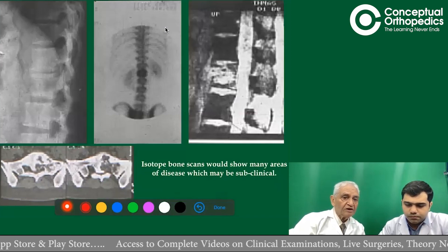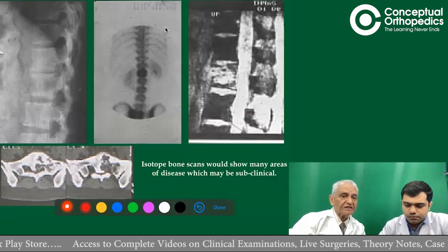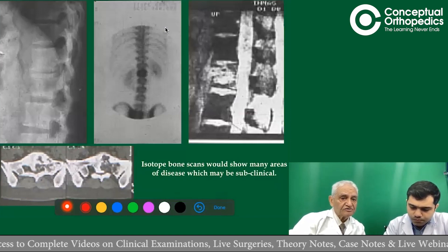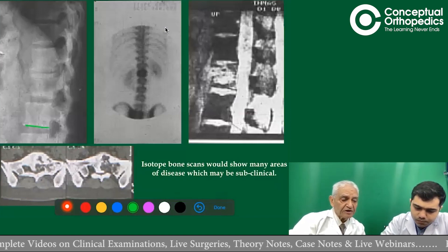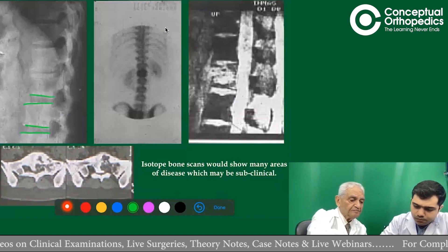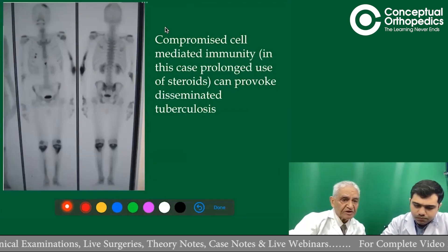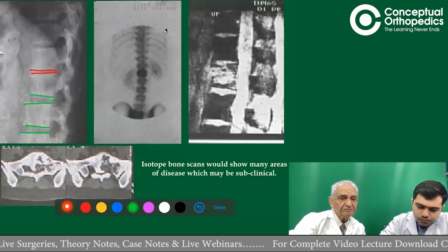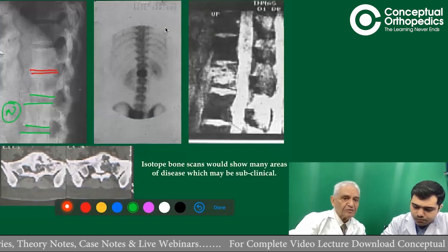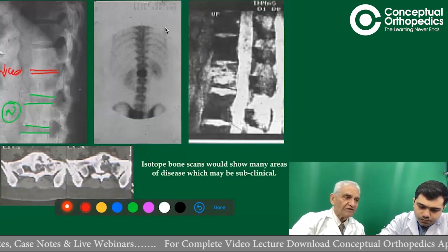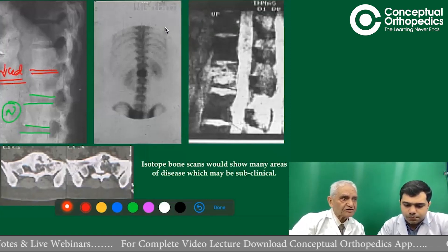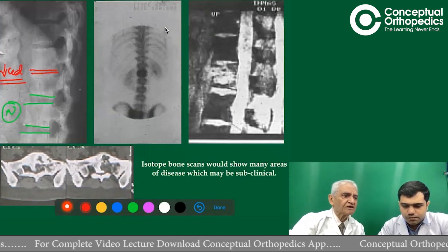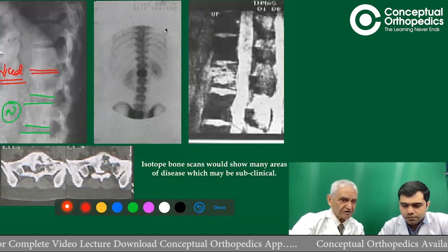Coming back to the earliest features in the X-ray: you can see diminished disc space and eroded paradiscal margins in that area, and you start suspecting tuberculosis. X-ray is available everywhere in the country and should enable anyone working anywhere to suspect this diagnosis. However, in difficult cases, better facilities may be needed.